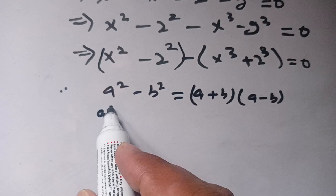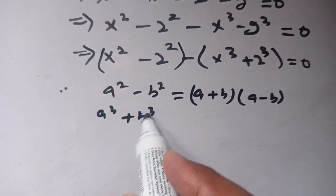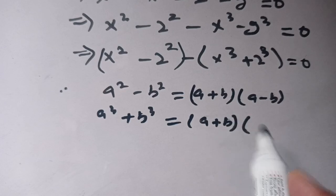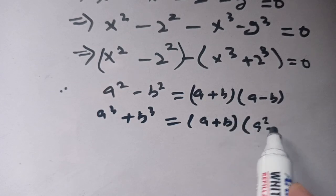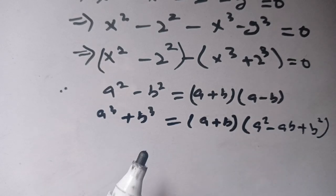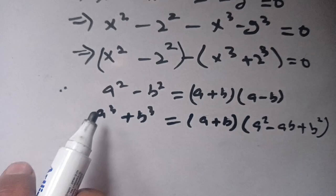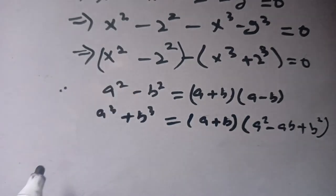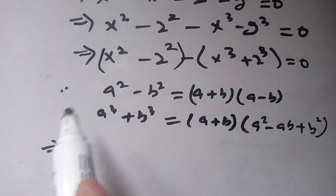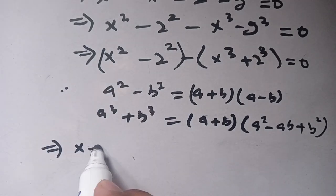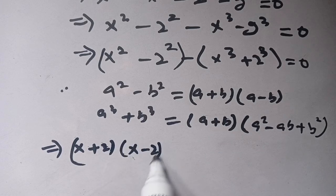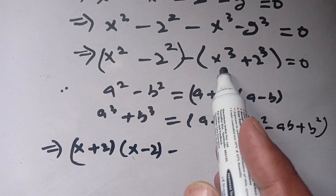Using these identities, the term (x squared minus 2 squared) becomes (x plus 2)(x minus 2), and minus (x cubed plus 2 cubed) becomes minus (x plus 2)(x squared minus 2x plus 4), all equal to 0.